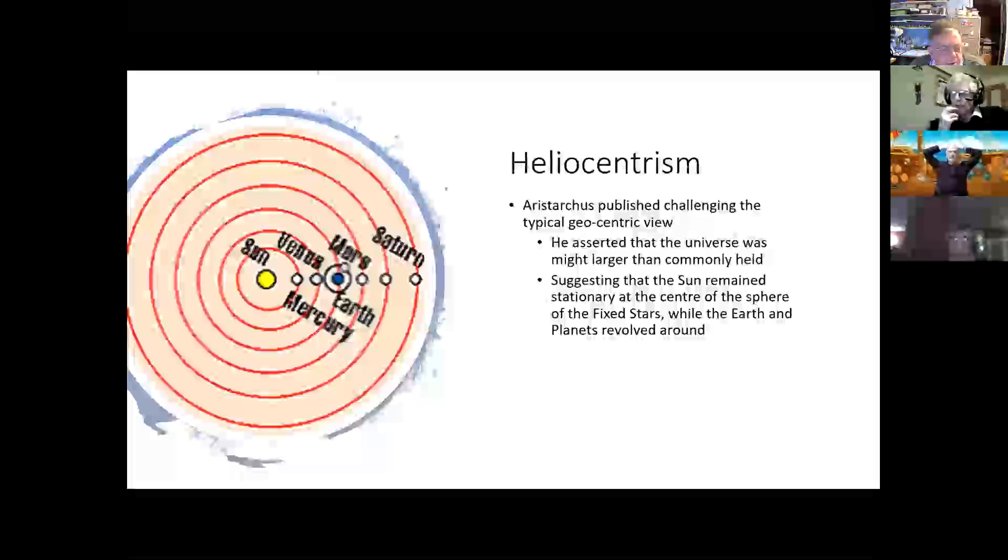He suggested that things worked out much more sensibly if you had the sun remaining stationary at the middle, while the earth and all the planets sat on individual spheres that then revolved around them. And this solved things like the problem of the retrograde motion of the outer planets and the phases and the sizes and so on, and the brightnesses of the inner planets. It all just made more sense if you figured it out that way.